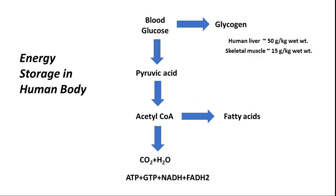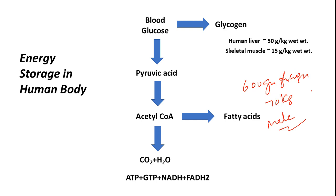In human liver you will find approximately 50 grams per kg body weight of glycogen, and also in skeletal muscles, because these are the two tissues where glycogen is synthesized. Overall, you will have approximately 600 grams of glycogen in a 70 kg male. This much glycogen is usually sufficient to run our body for two days — approximately 48 hours.